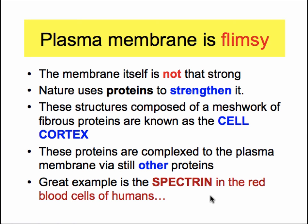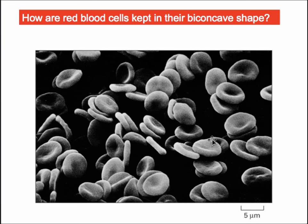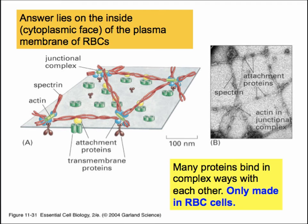The lipid bilayer is quite flimsy in that it doesn't have much internal strength. Proteins can be deposited on either side of the membrane to enhance its stability and strength. A great example is red blood cells, where their shape is maintained by proteins deposited on the inside of the plasma membrane. These transmembrane proteins in green are anchored to each other by a vast network of protein cables, giving red blood cells great stability — especially important as they travel at high speed through blood vessels.